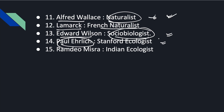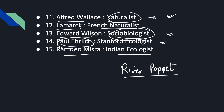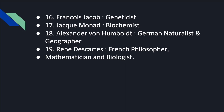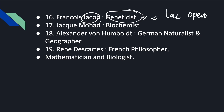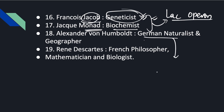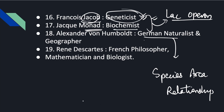Paul Ehrlich, who gave the Rivet Popper Hypothesis, is a Stanford ecologist. Ramadev Mishra is an Indian ecologist who worked on ecology in India. Francis Jacob and Monod also worked on genetics — specifically, Jacob and Monod gave the lac operon model. Both are biochemists and geneticists who worked on lac operon. Alexander Von Humboldt worked on species-area relationships in ecology, showing that as area increases, species richness increases.